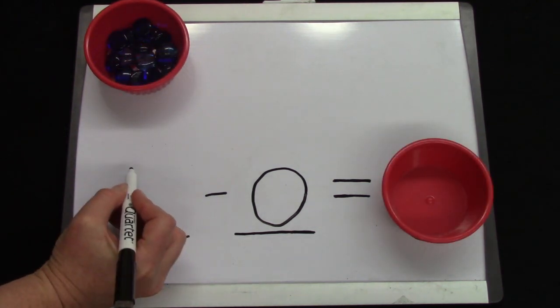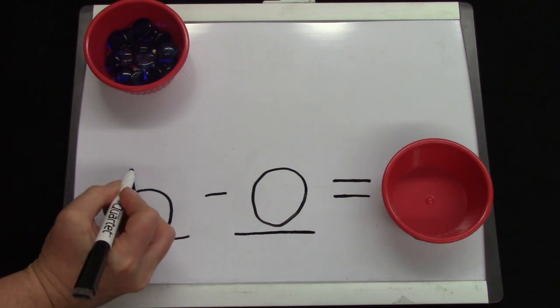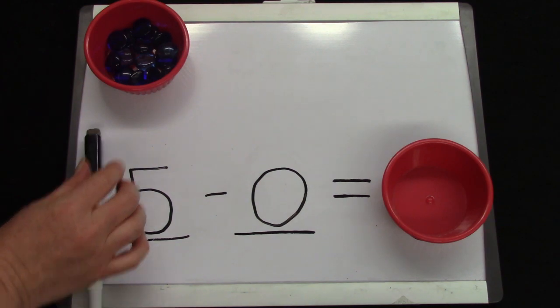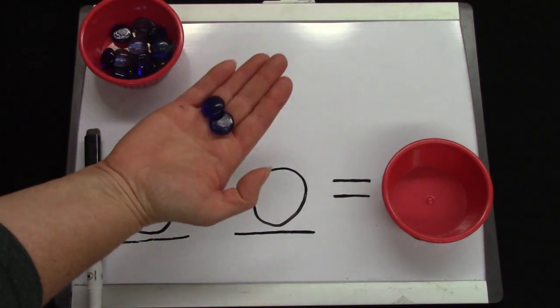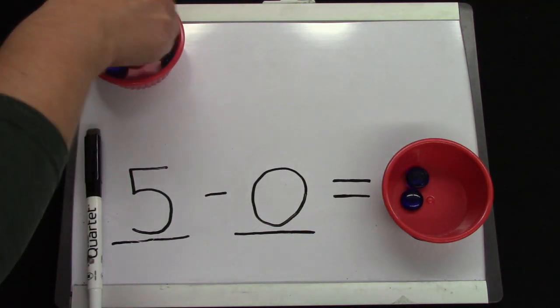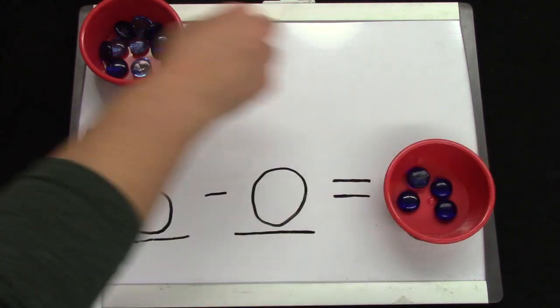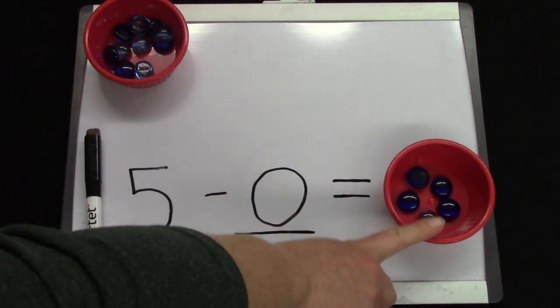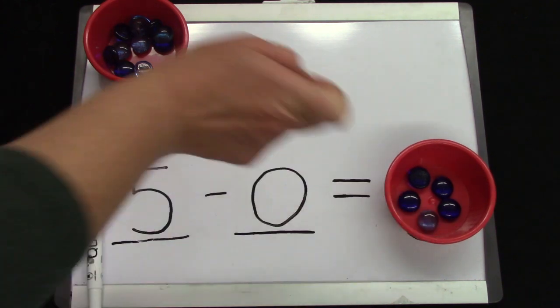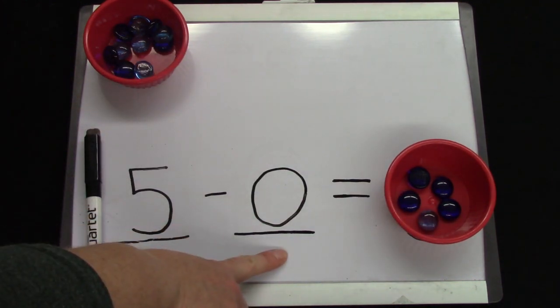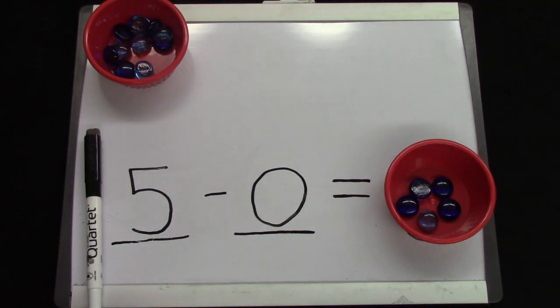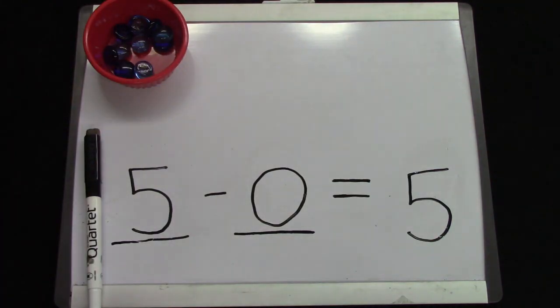All right, now on this number sentence, I'm going to start with the number five. That means I need to put one, two, three, four, five right in my little cup. Five take away zero. All right, I'm going to take away nothing. Five take away zero equals? What is it? Five.